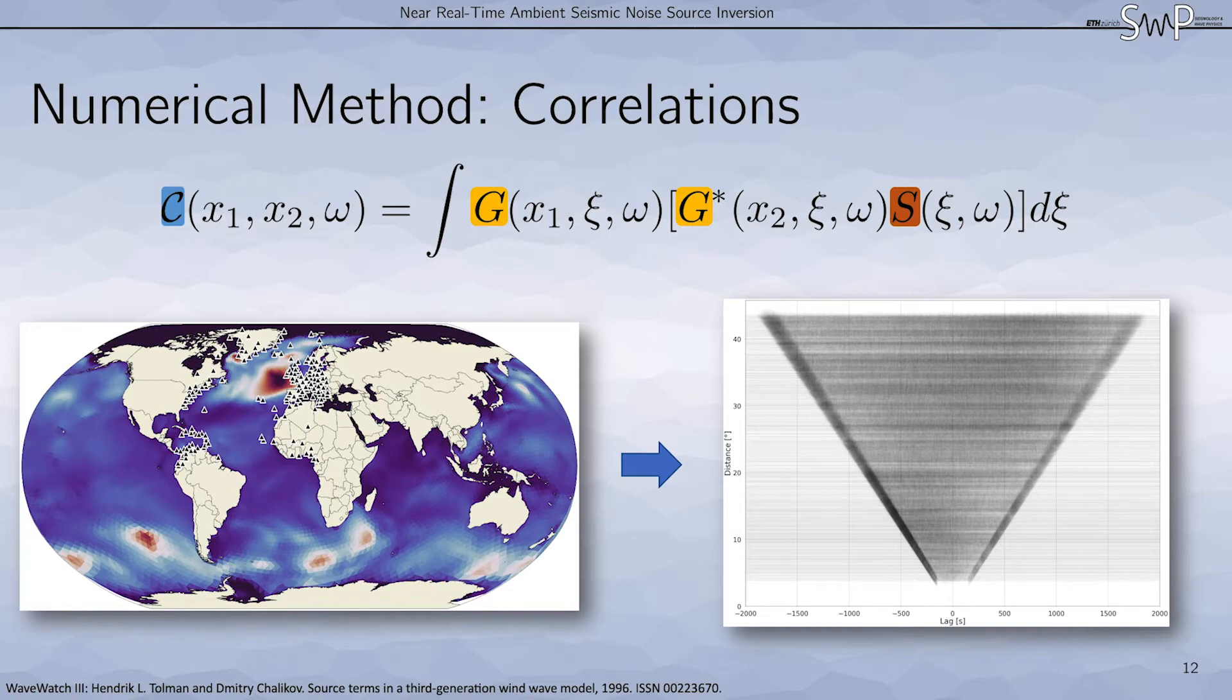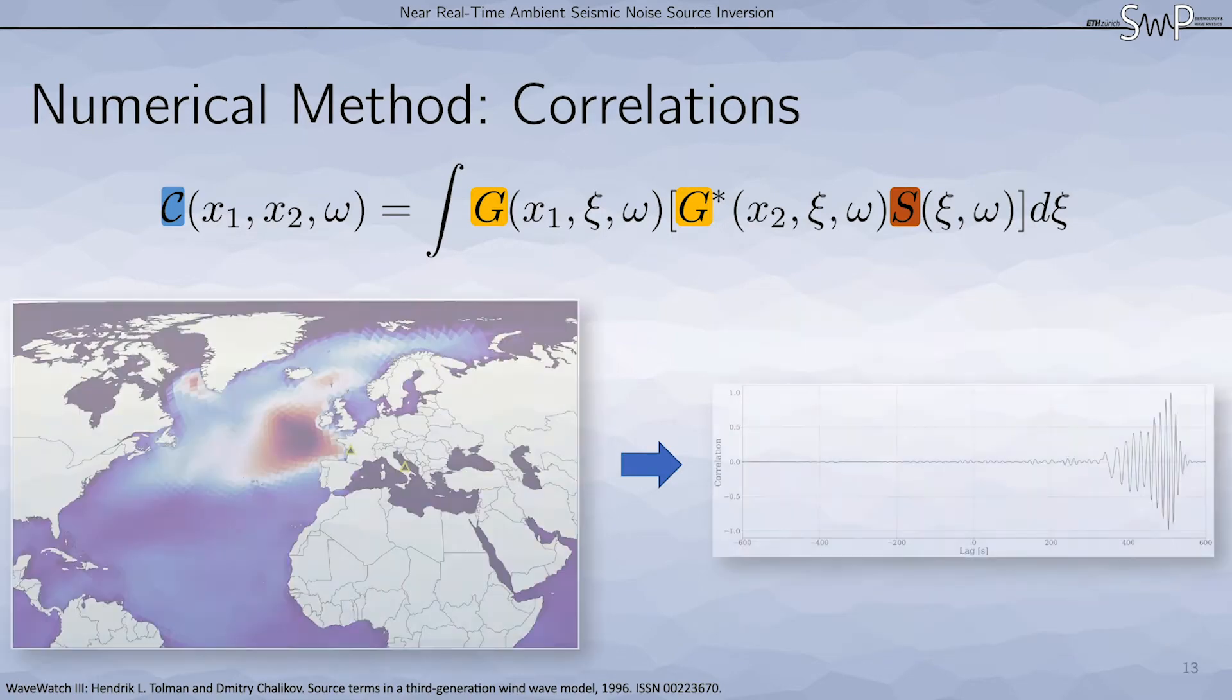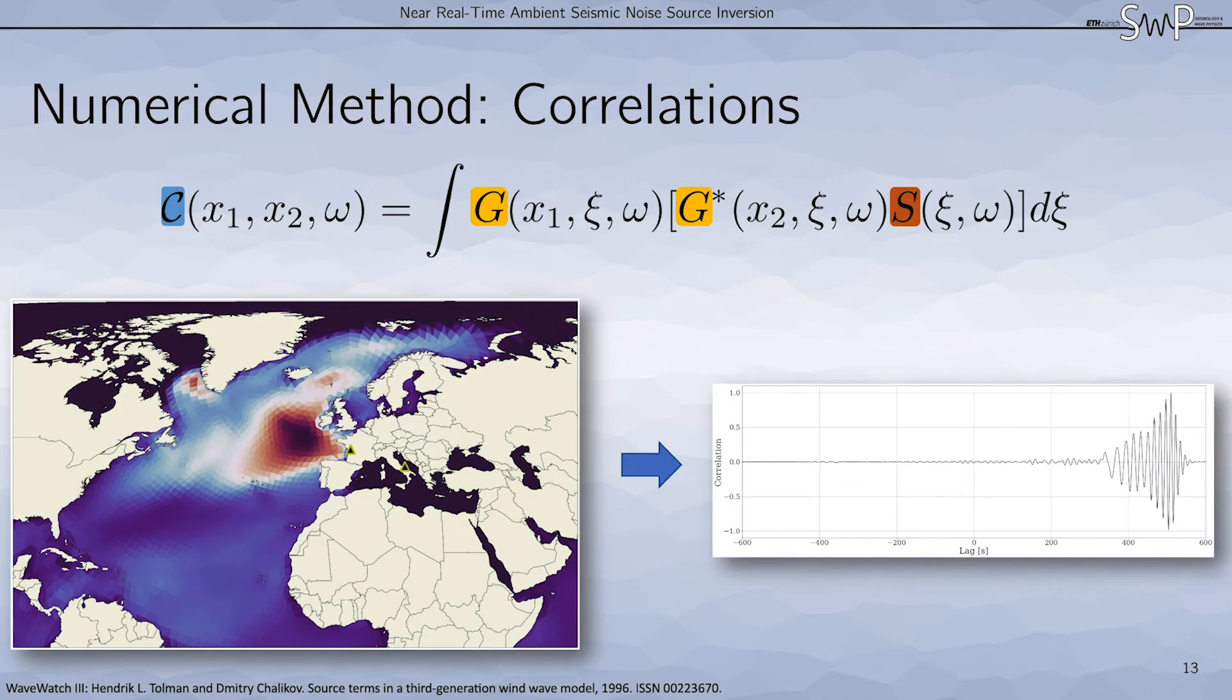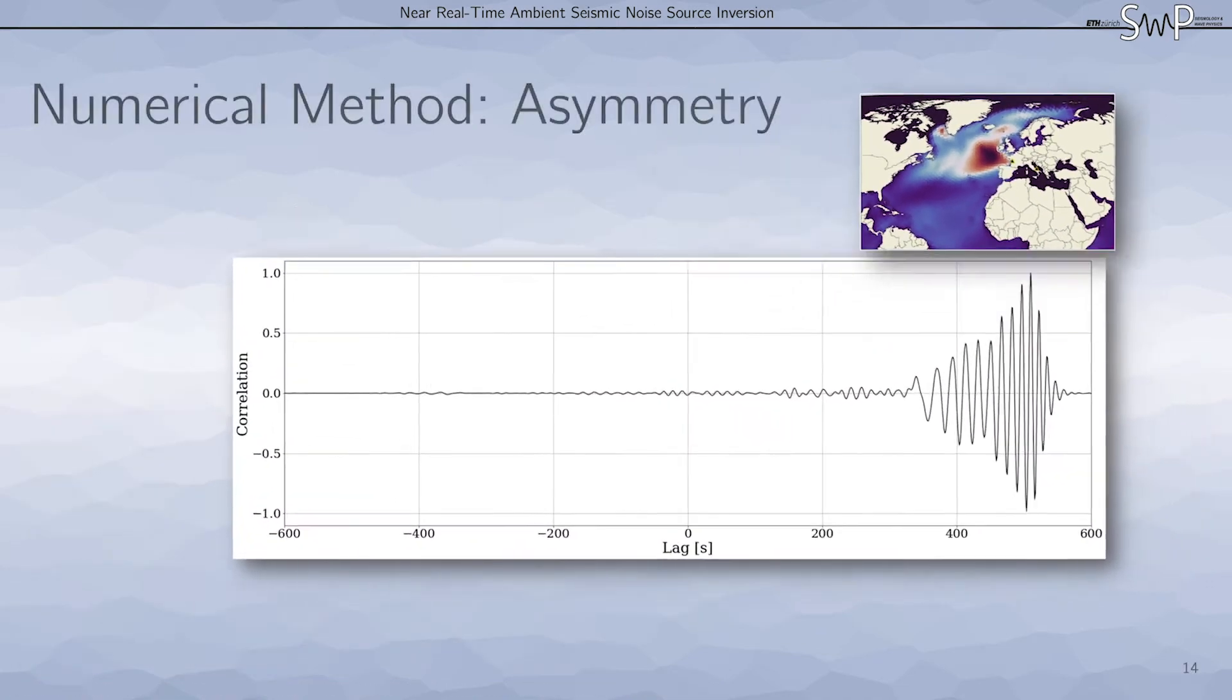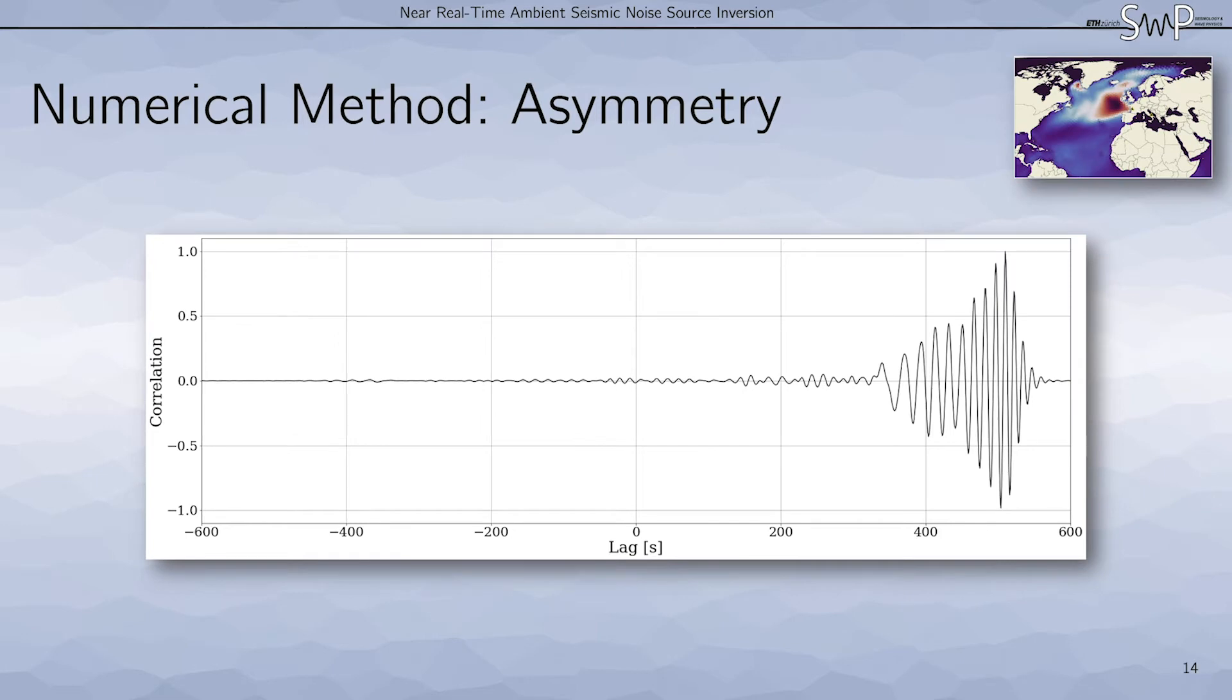One thing that we can nicely see in the section plot is the surface wave move out. Let's have a closer look at a single station pair. As we can see, the cross-correlation for this station pair has a very strong asymmetry. In particular, if we look at the surface wave arrival window, we see that the causal part has much higher amplitudes than the a-causal part. This is due to the noise source distribution being very heterogeneous.